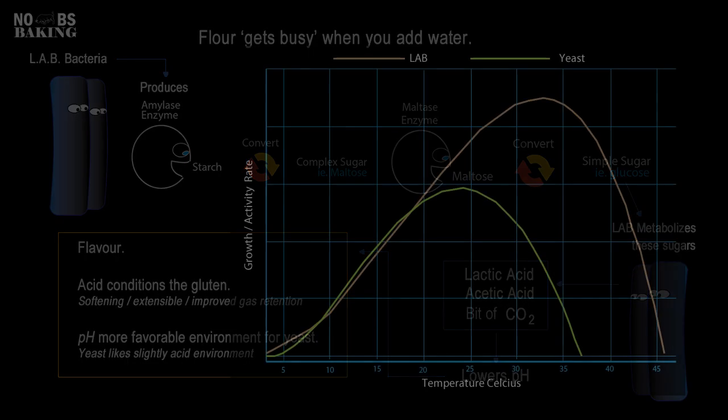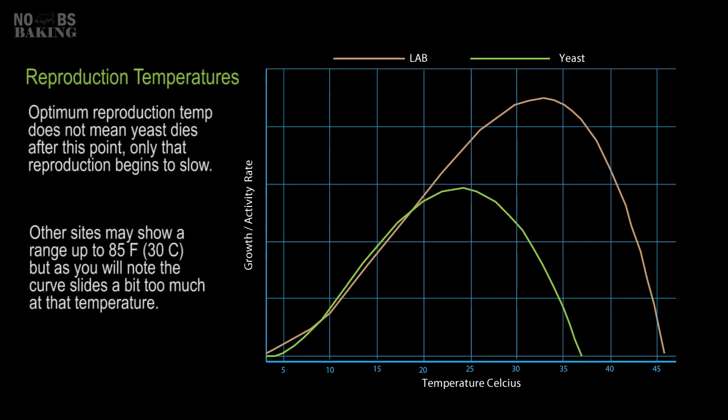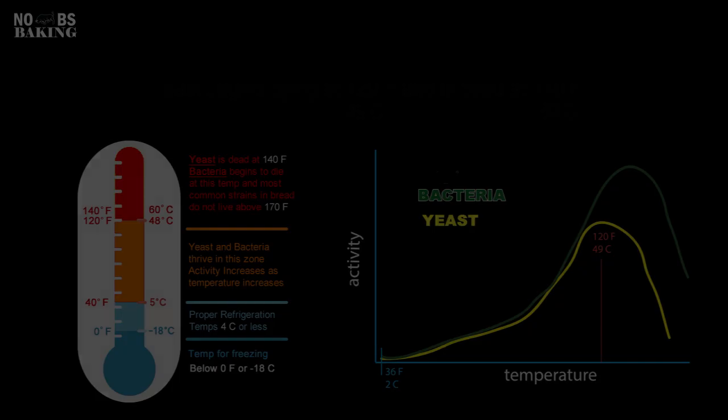Here's a graph that demonstrates the reproduction activity and the optimum temperatures for this process for both yeast and bacteria. The takeaway here is that they both reproduce at similar rates; however, the optimum temperature for bacteria far outscales yeast.